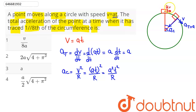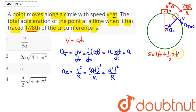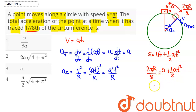At t equal to 0, when the particle starts its motion, the speed is 0. When it covers one-eighth of the circumference, the distance is 2πr/8. Using s = ut + ½at², with s = 2πr/8 and initial velocity u = 0, we get 2πr/8 = ½·a·t², which gives t² = πr / (2a), so t² = πr/2a.